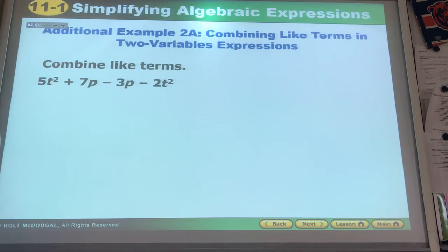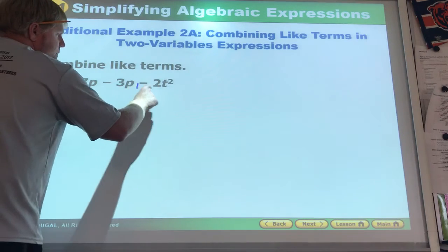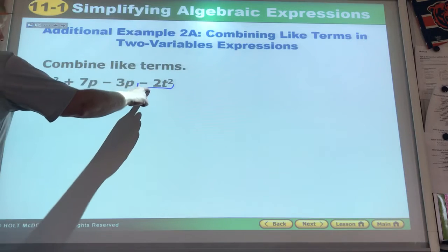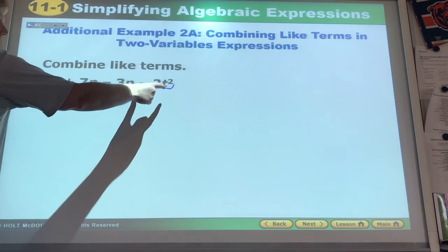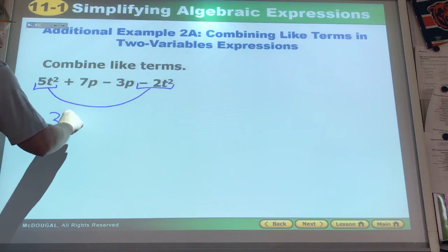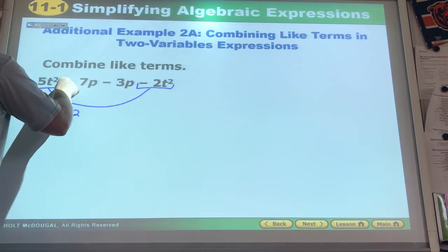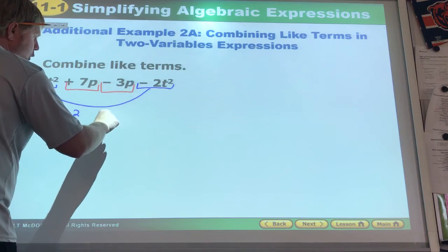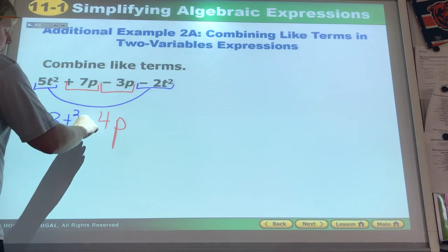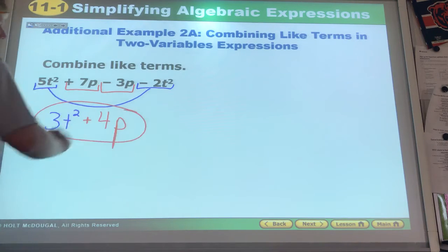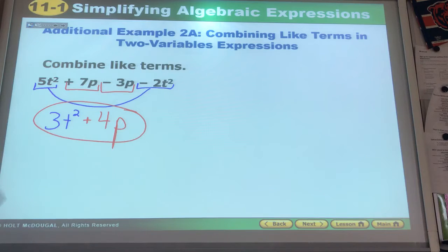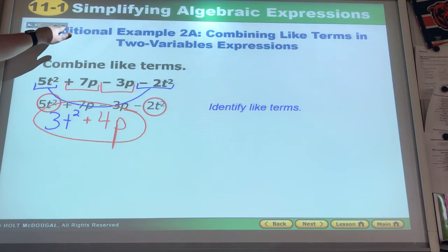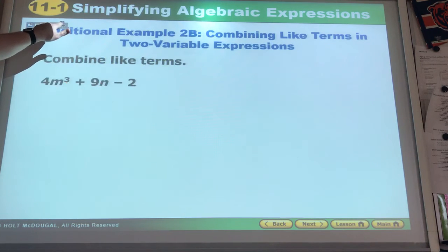Here we look at our like terms. Those can go together. Positive 5, negative 2, 3t squared. Positive 7, negative 3, that would be 4p. And since that's a positive 4p, you put an addition sign. And you've got your answer. They identify their like terms, they combine them, and they got the same as us.